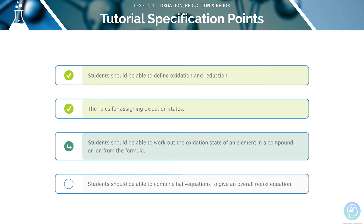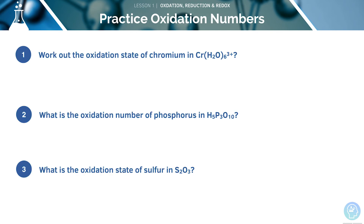Our next specification point is to work out the oxidation state of an element in a compound or ion. For an ion, the sum of the oxidation states is equal to the charge on the ion. There is a shortcut for working out oxidation states in complex ions where the metal atom is surrounded by electrically neutral molecules like water or ammonia: the sum of the oxidation states in the attached neutral molecule must be zero, so you can ignore them when you do the sum. This means the compound given here is simply a Cr³⁺ ion, so its oxidation state is +3.